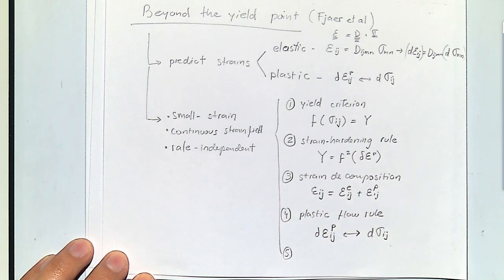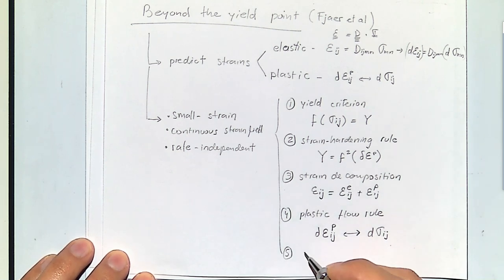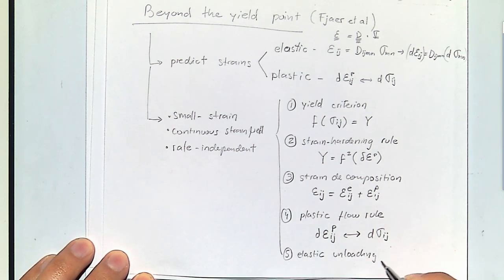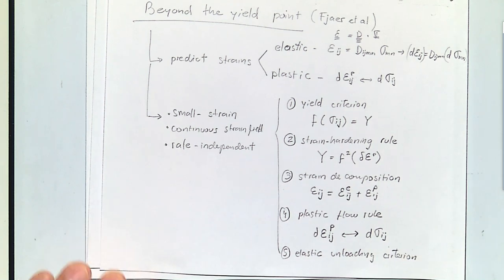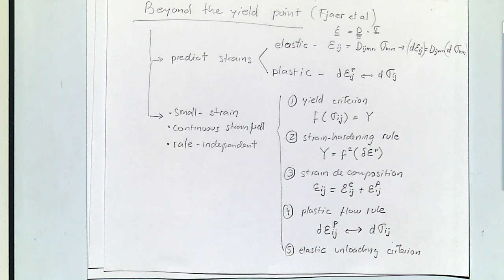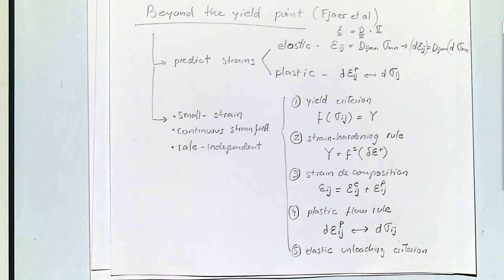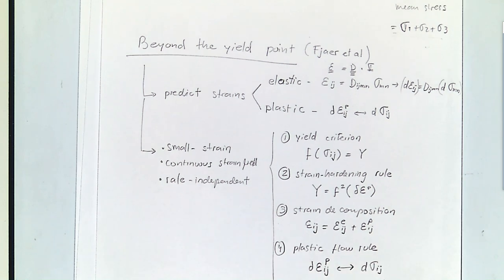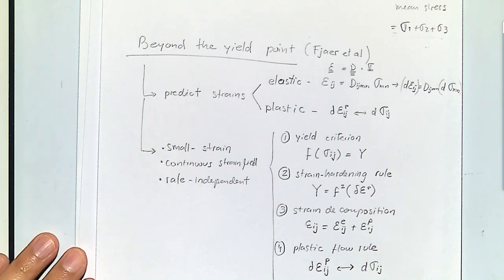Fifth, we need an elastic unloading criterion. This tells us what happens if I go through yield and then unload — will the slope of unloading be the same as loading or different? The simplest model assumes unloading is the same as loading. This is a little abstract, but an example will clarify all of this a lot more.